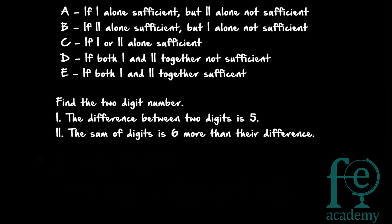Let's see the first question. The problem is: find the two-digit number. Statement one is: the difference between the two digits is five. Statement two is: the sum of the digits is six more than their difference.